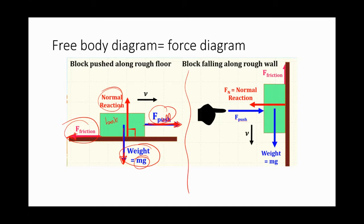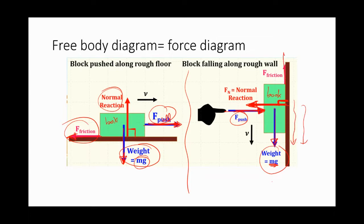Another case: pushing a book against a wall. The forces acting on the book are your external force, the weight downward (mg), the normal force perpendicular to the wall, and friction. Since the book tends to slide down, the friction acts upward — opposite to the direction of motion.